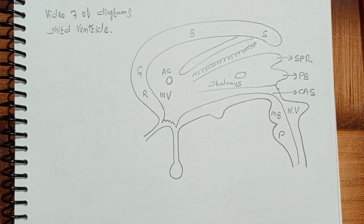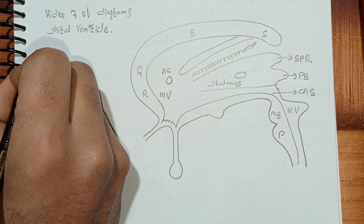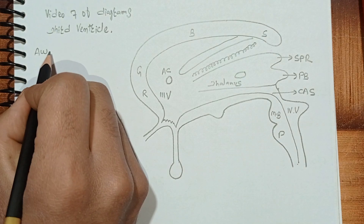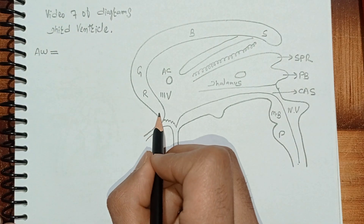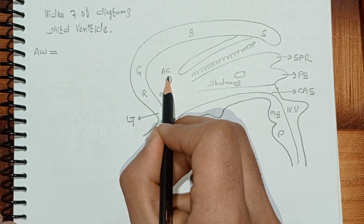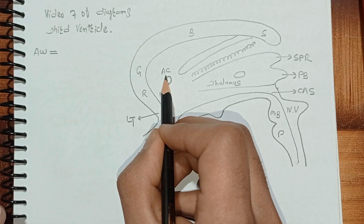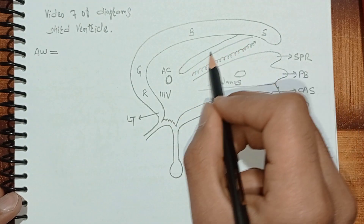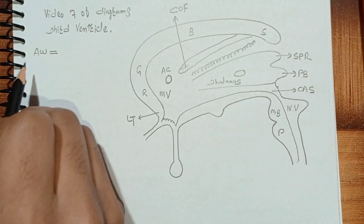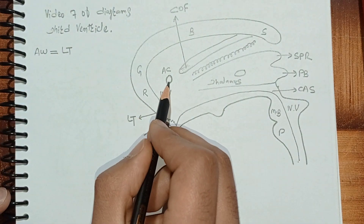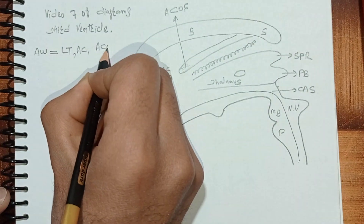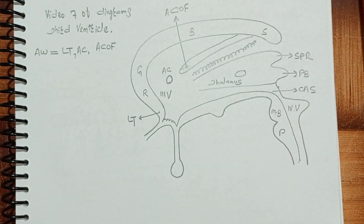Now we will name the structures in sequential order. First, the structures that form the anterior wall of the third ventricle. The anterior wall is formed by three structures: number one is the lamina terminalis; number two is the anterior commissure; and the third structure is the anterior columns of the fornix. So the anterior wall is formed by lamina terminalis, anterior commissure, and anterior columns of the fornix.